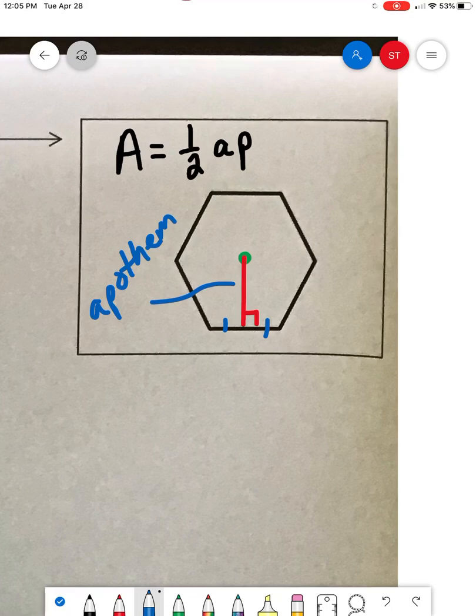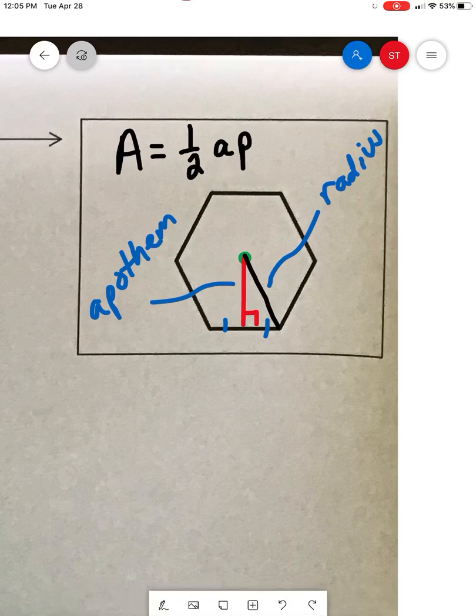The other thing you need to know, and maybe we'll use black, is this right there. That, my friends, is the radius of this polygon. It goes from the center to a vertice, okay? Now that we have that, we can handle some of these questions.